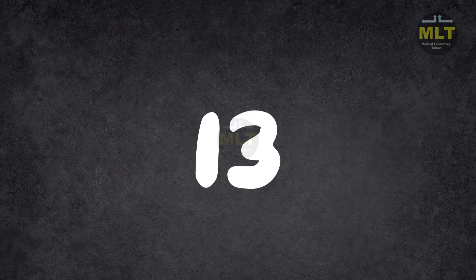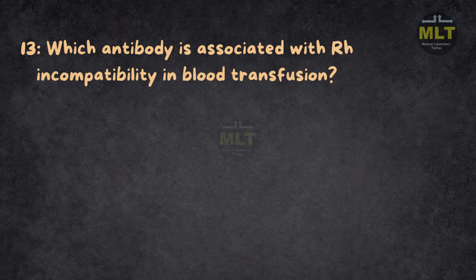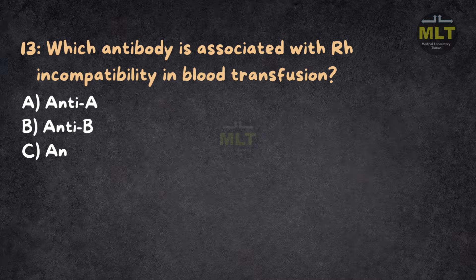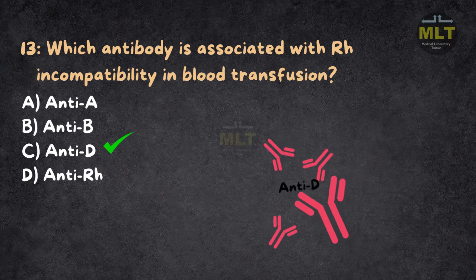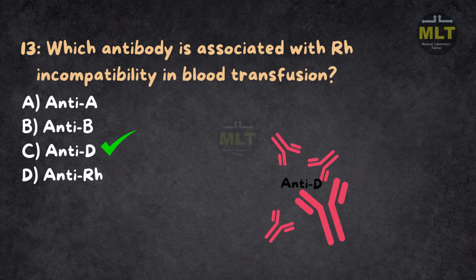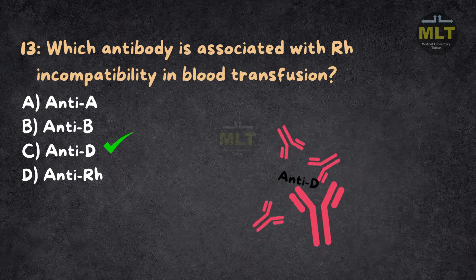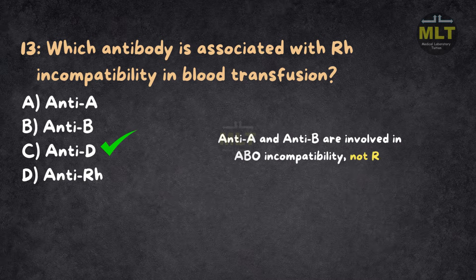Question 13: Which antibody is associated with RH incompatibility in blood transfusion? Option A: Anti-A. Option B: Anti-B. Option C: Anti-D. Option D: Anti-RH. Correct answer: C, Anti-D. Anti-D antibodies are formed when an RH-negative individual is exposed to RH-positive blood, leading to RH incompatibility. Anti-A and anti-B are involved in ABO incompatibility, not RH.